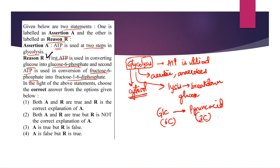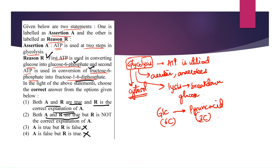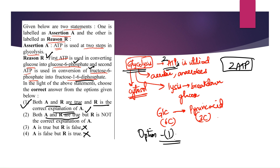The reason states: first ATP is used in converting glucose to glucose 6-phosphate — yes; and the second ATP is used in converting fructose 6-phosphate into fructose 1,6-bisphosphate — also correct. Both assertion and reason are true, and the reason is the correct explanation of the assertion. Therefore, option 1 is the right answer. During glycolysis, 2 ATPs are utilized and 4 ATPs are generated, giving a net gain of 2 ATPs.